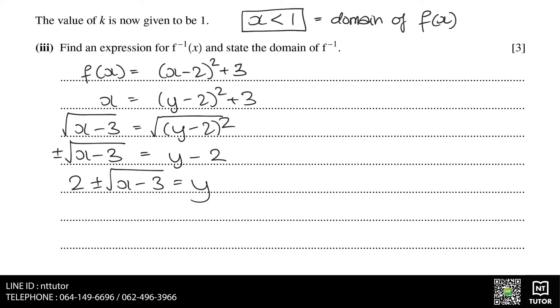After rearranging for y, we get the inverse function equals 2 plus or minus the square root of (x minus 3). This means we have two options for the inverse function, but there can only be one, so we need to come up with a way to choose which one it is.